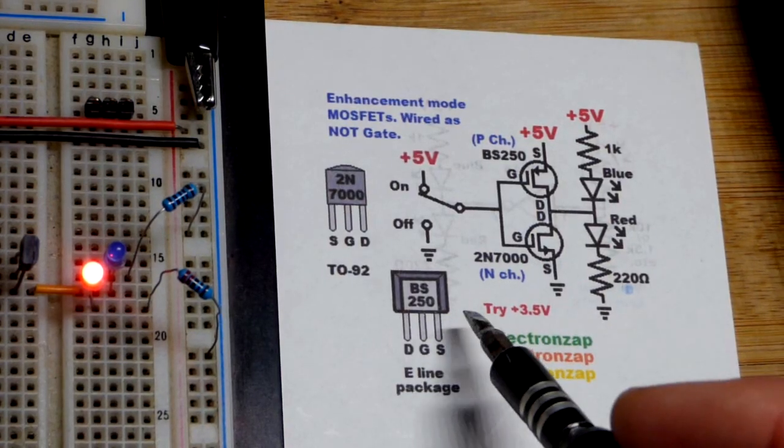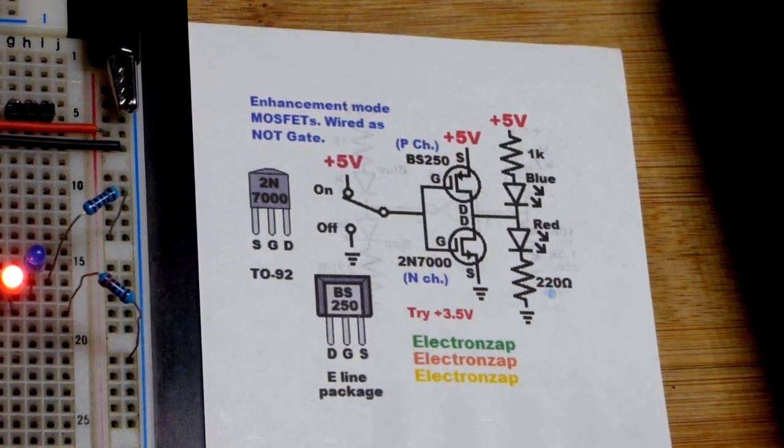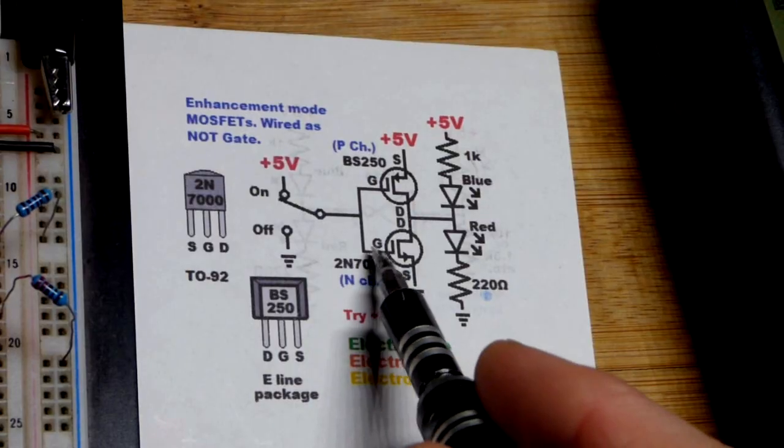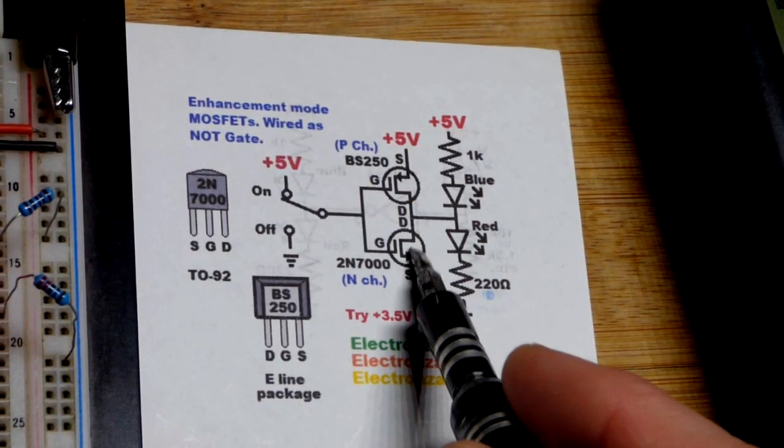Now when we give a 5 volt signal right there, that's going to go to both gates. So since we got more positive there, that'll make that more negative, make the N-channel turn on, blue LED will light up, and it'll turn the P-channel off.